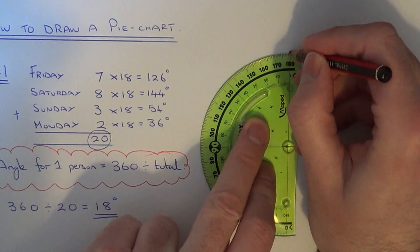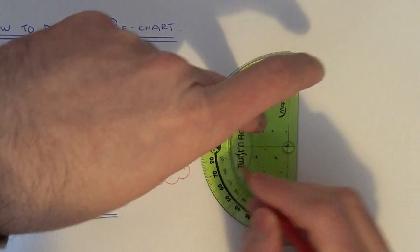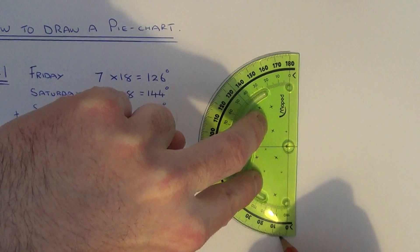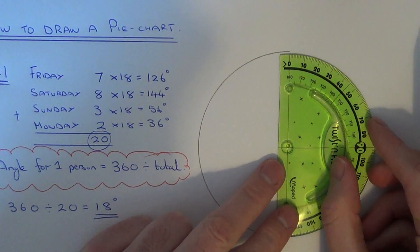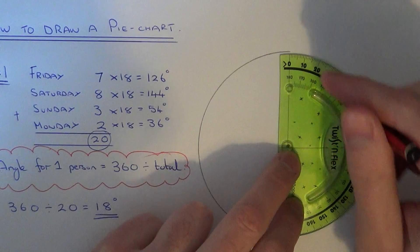Or you can use your compass. Just go from 180 to 0 and turn that around, do the same again.